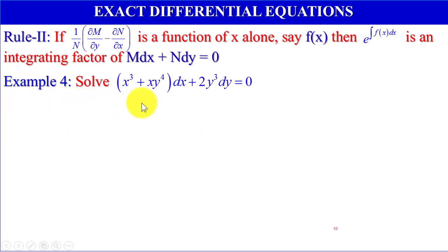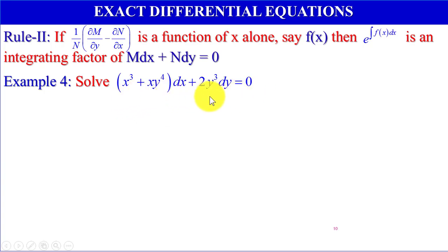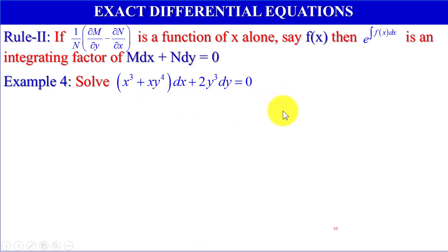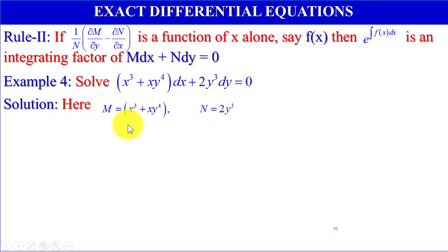Example 4: Solve the equation (x cubed plus x y to the power 4) dx plus 2y cubed dy equals 0. This equation is not homogeneous because M equals x cubed with exponent 3 and the term x y to the power 4 has sum of exponents 5, while N has degree 3. Here M equals x cubed plus xy to the power 4 and N equals 2y cubed.